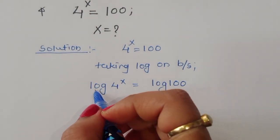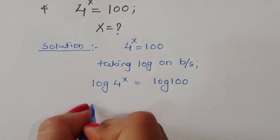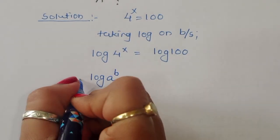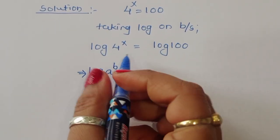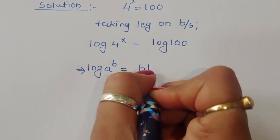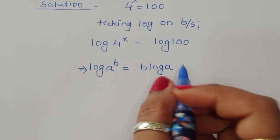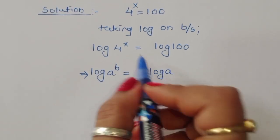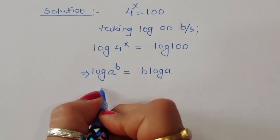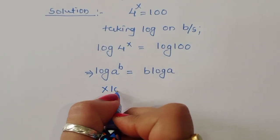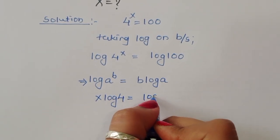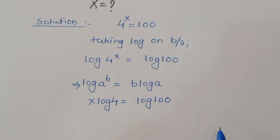Now, this uses the formula for log of a power b. If log of a power b is given, we can write it as b log of a. So using this formula, we can write this as x log 4 is equal to log of 100.